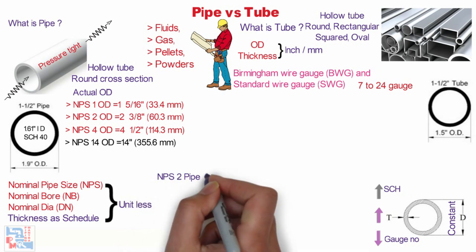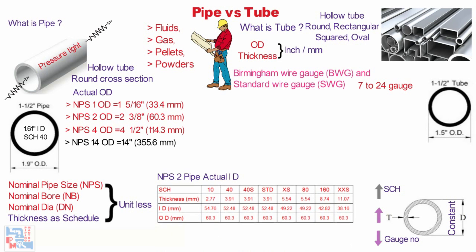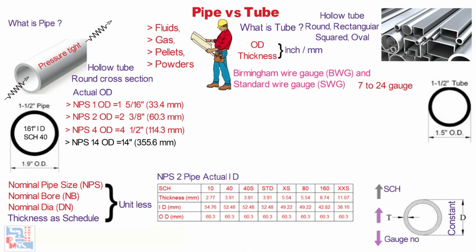Now let's see the actual inside diameters of a 2 inch pipe. For different schedules, there are different thicknesses which give different IDs for a 2 inch pipe. For schedule 10, pipe thickness is 2.77 mm, giving an ID of 54.76 mm for an OD of 60.3 mm. For schedule standard, thickness is 3.91 mm, giving an ID of 52.48 mm with OD of 60.3 mm — which is fixed. For schedule 160, the thickness is 8.74 mm, giving an ID of 42.82 mm with OD of 60.3 mm.